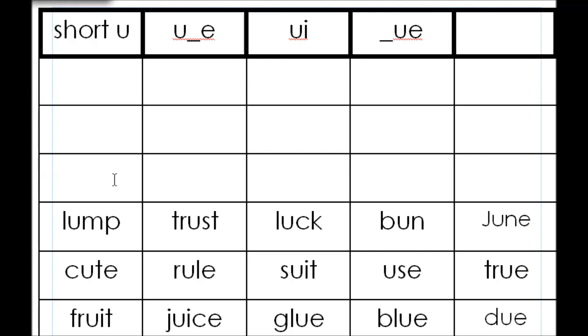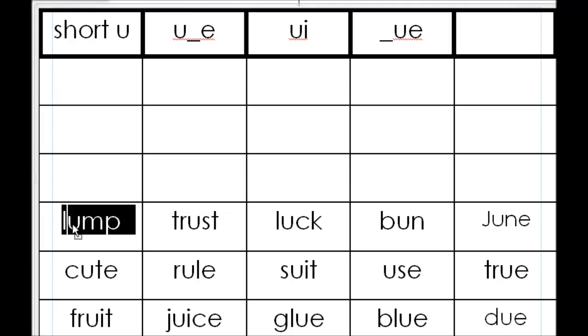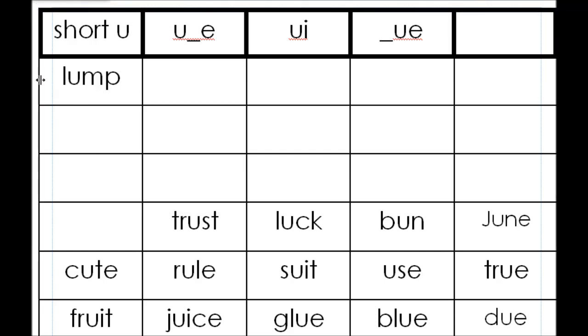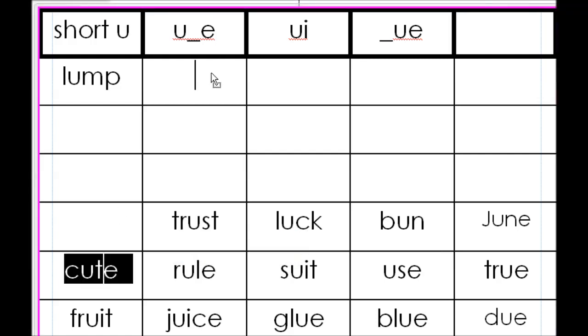So as we read, we heard about three different sounds. We heard the short U saying uh like lump. So we know that's a short U sound. L, uh, uh, ump. As if someone hit you in the stomach, we say uh, uh. But then here we have cute.